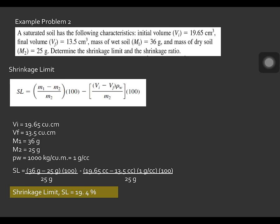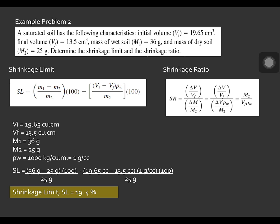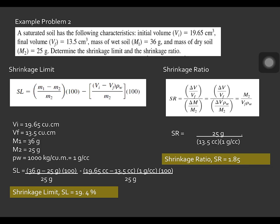To solve for the shrinkage ratio, the formula is M2 divided by VF multiplied by the density of water. Substituting the values — M2 equals 25 grams, VF equals 13.5 cubic centimeters, and density of water is 1 g/cm³ — be aware of units and use proper units to get the correct answer. Solving, the shrinkage ratio SR is equal to 1.85.